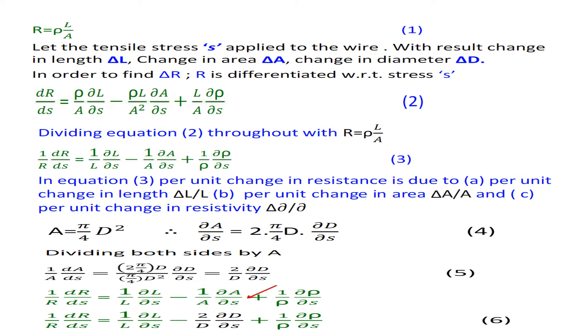This is equation 3. In equation 3, per unit change in resistance is due to (a) per unit change in length ΔL/L, (b) per unit change in area ΔA/A, and (c) per unit change in resistivity Δρ/ρ.